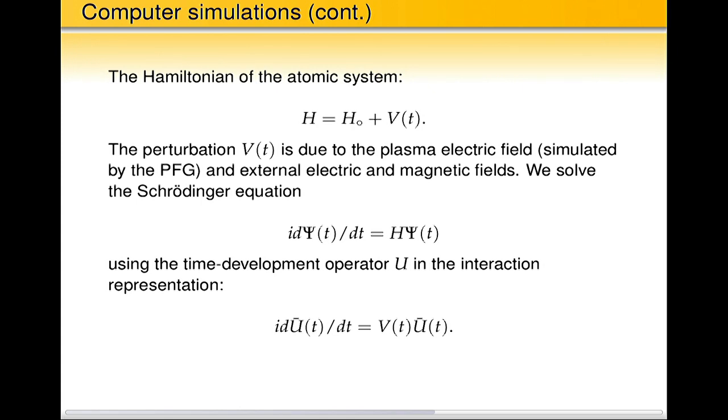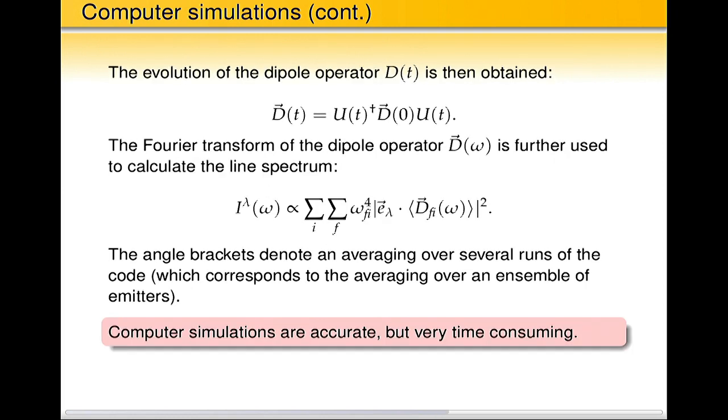How do you solve it, usually, one, nobody solves Schrödinger equation of course in the coordinate space, it's always matrix. So the Schrödinger equation we can rewrite it in form of the time development operator, that's in the interaction representation. The dipole operator is calculated like that when you have the evolution operator handy.